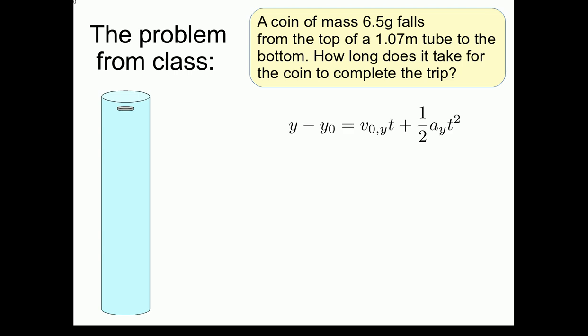In class, we saw that the acceleration of the coin was constant, and thus we could apply our kinematic equations to this example. We argued in class that the appropriate kinematic equation in this case is the one you see here, because we're interested in connecting the distance, which is on the left side of this equation, to the time it takes for the coin to fall, which is on the right.